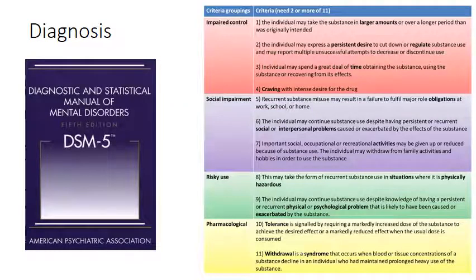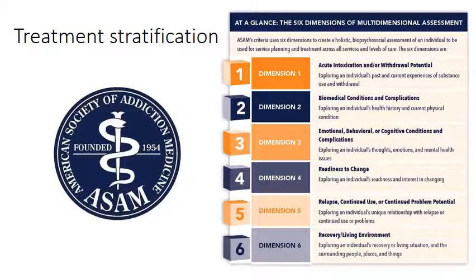Regarding diagnosis and treatment stratification: the DSM-5 has 11 criteria across four domains — impaired control, social impairment, risky use, and pharmacological tolerance and withdrawal — and you only need two to make a diagnosis of substance use disorder. ASAM recommends a multimodal assessment across six dimensions before deciding what treatment is necessary, ensuring accurate and individualized treatment.